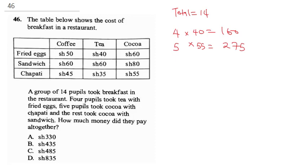If we want to get the rest we'll say 14 minus (4 plus 5), which is 14 minus 9, which equals 5 pupils. So 5 pupils took cocoa with sandwich.